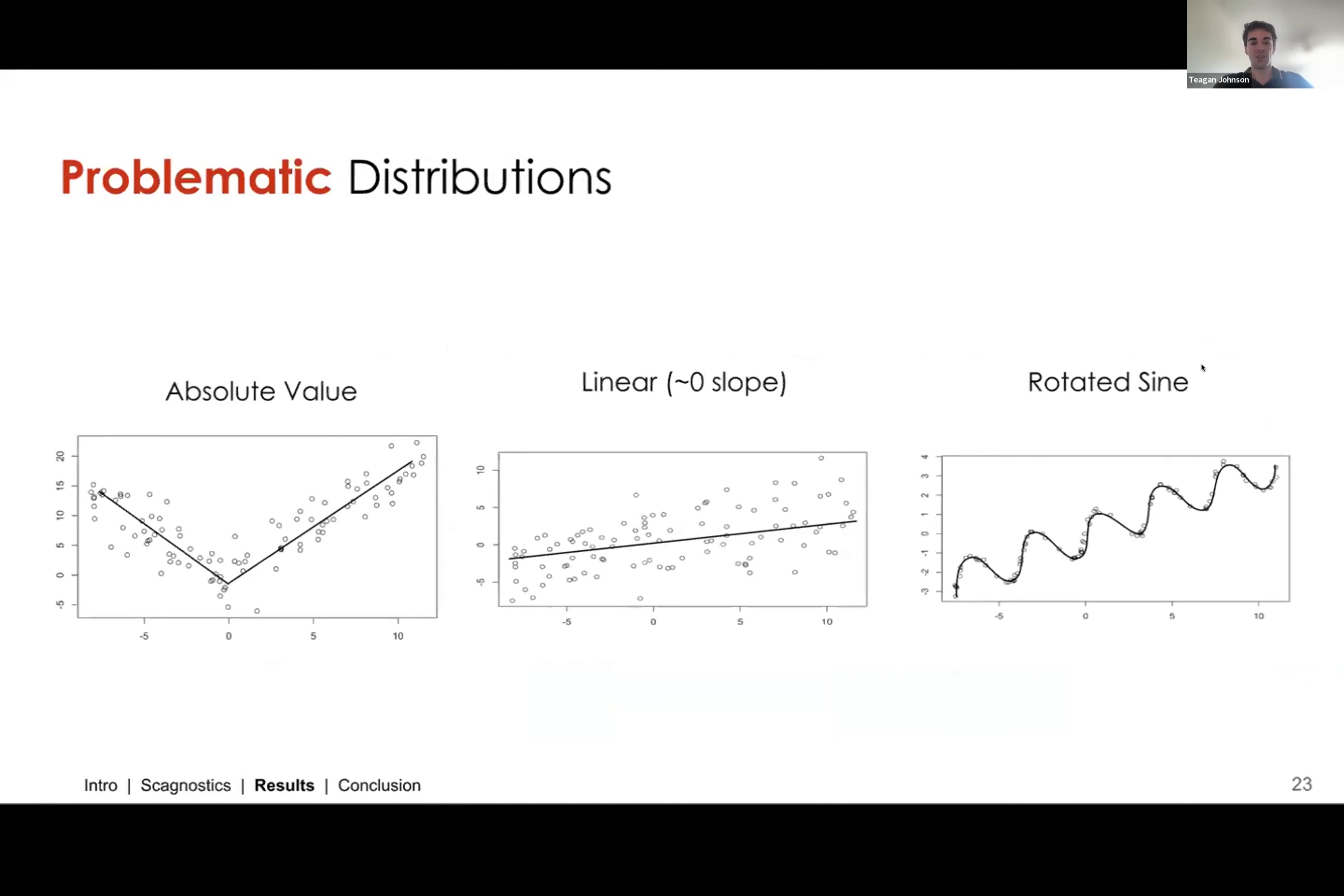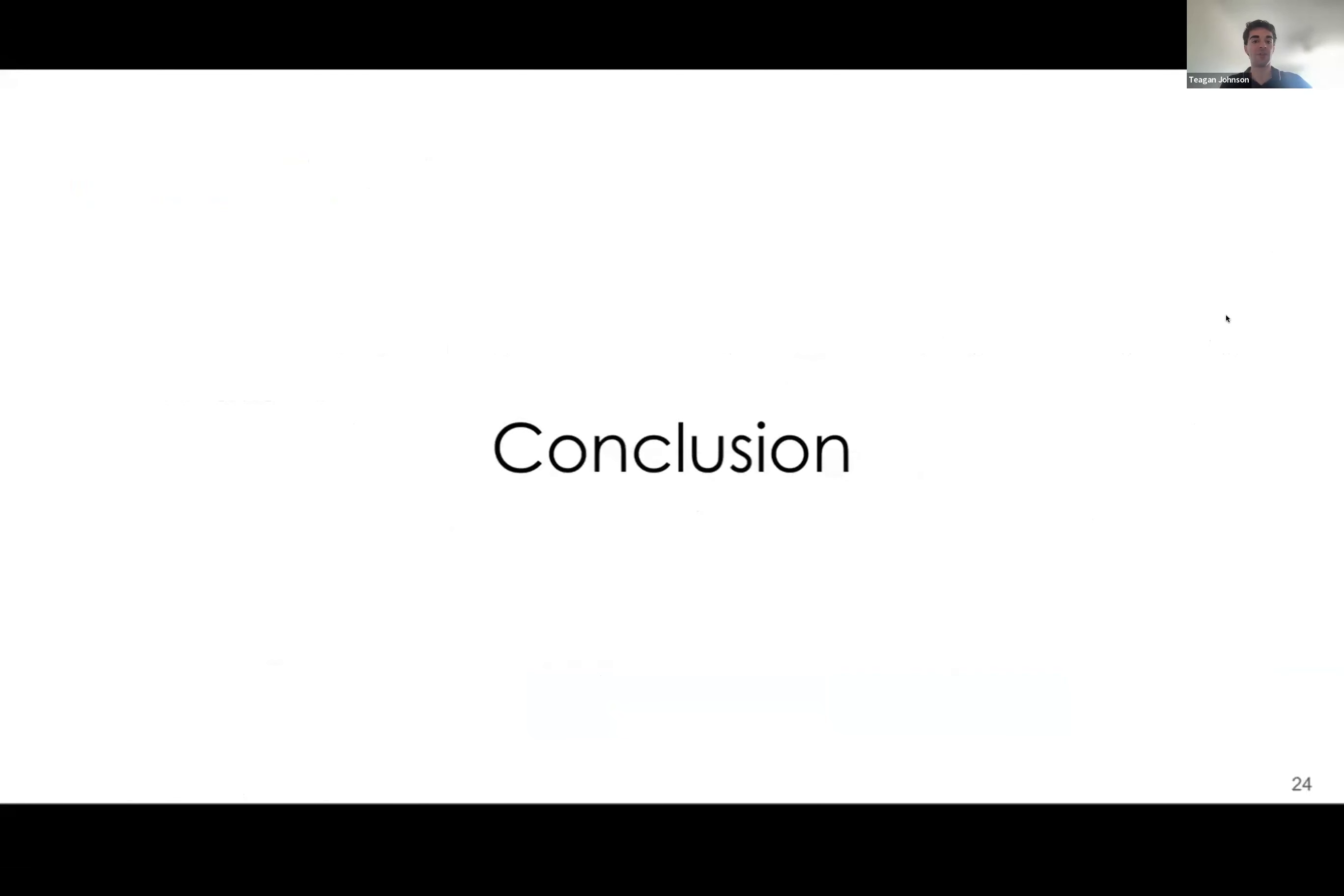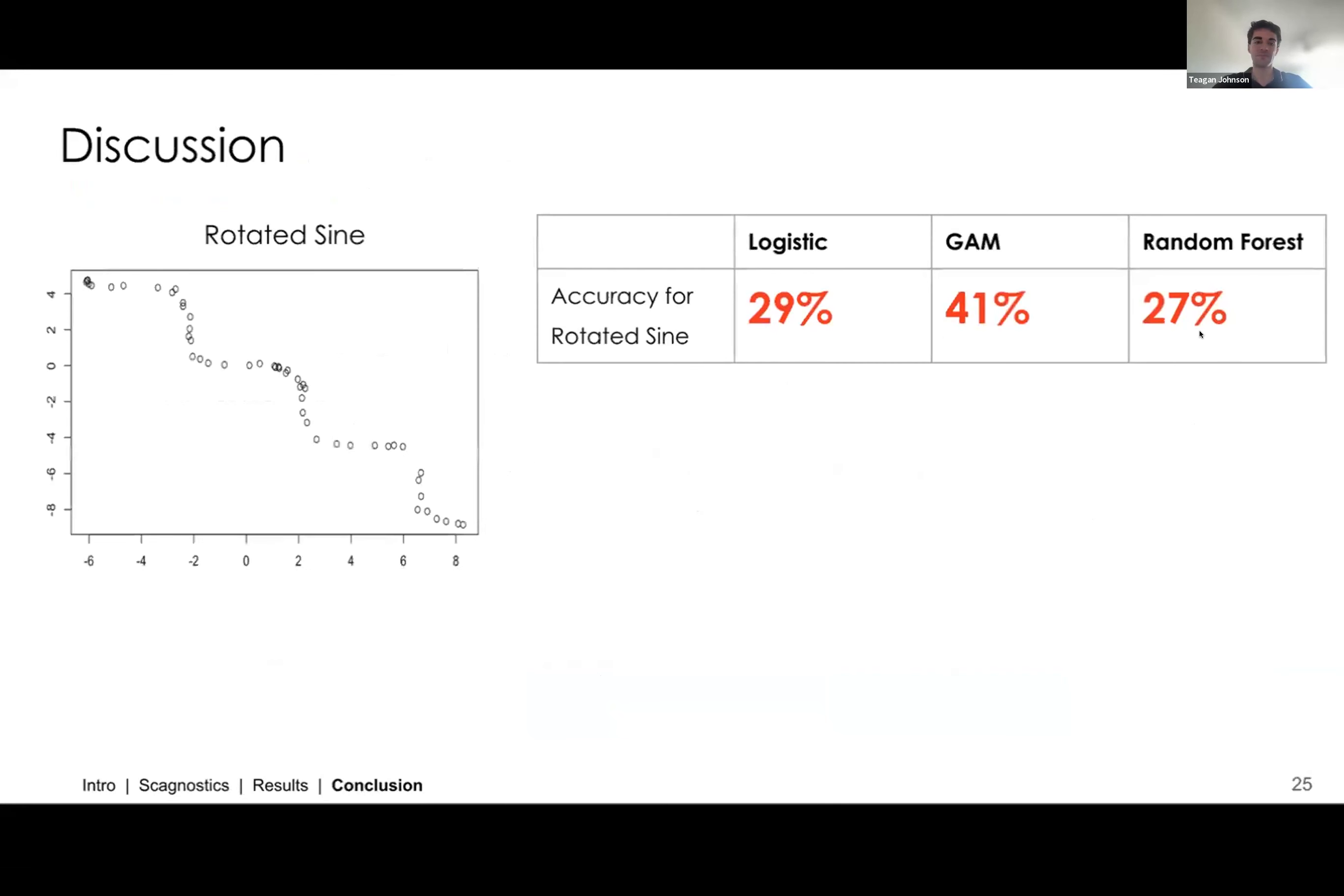Those same three plots show the lowest accuracies. So in summary, we can see that we have these three problematic distributions, absolute value, linear near zero slope, and rotated sine. And I'm going to pass it back to Tegan, who's going to talk about how we dove further into this.